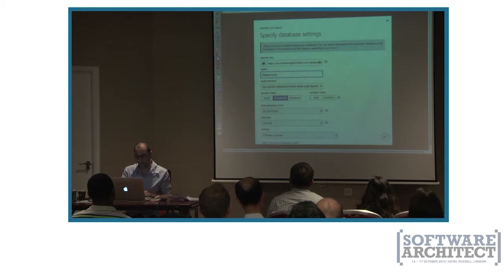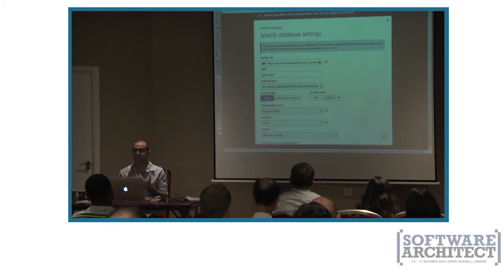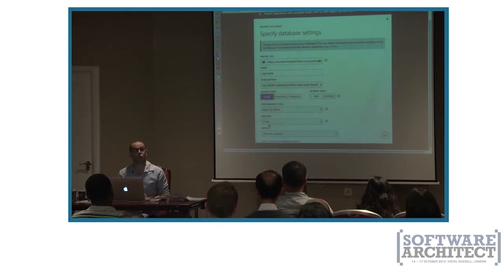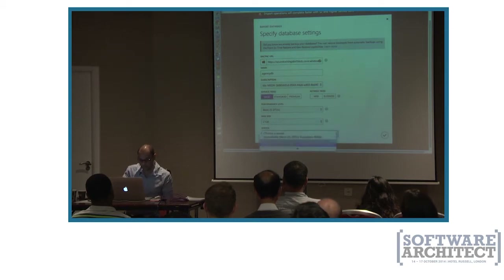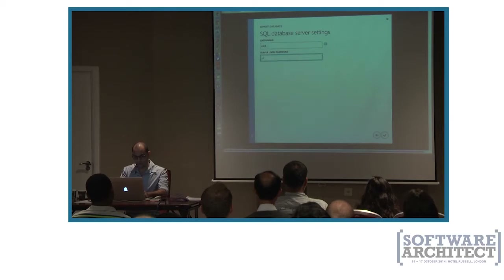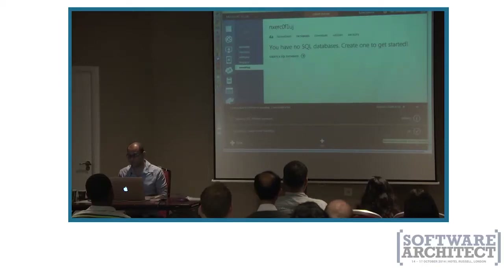Now I can go back to the import dialog and click the backup URL. There's a list of storage accounts in this subscription. I copied the files to DB Backup, so I'll select the first one — AgencyDB. I'll choose the Basic tier, which costs about $12 a month — even less than a SQL Server license at $20 to $30 per month. The difference between Basic, Standard, and Premium is the number of transactions per second you can get.